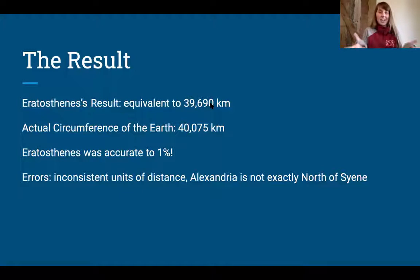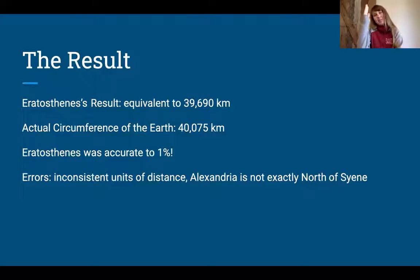This is really close to the actual circumference of the Earth, which we know today to be 40,075 kilometers. Eratosthenes was accurate to one percent. That's huge for ancient times. There were some sources of error, though, as there always are. There was an inconsistent unit of distance—a stadia was supposed to be the length of a stadium, but not all stadiums were the same length. It wasn't a standardized unit like centimeters or kilometers today. Also, as I mentioned, Alexandria is not exactly north of Syene, which would affect the calculations.